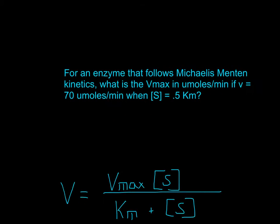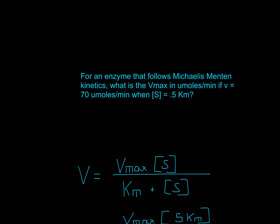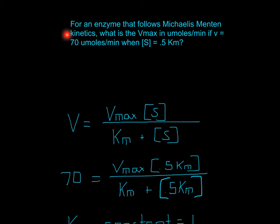We would start with the Michaelis-Menten equation, which is this, and fill out any information we have. The one information we do have is 70 umoles per minute, which would be velocity.